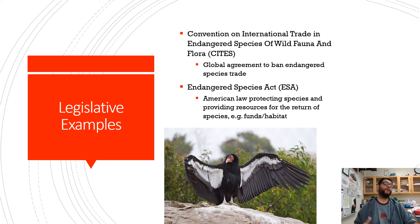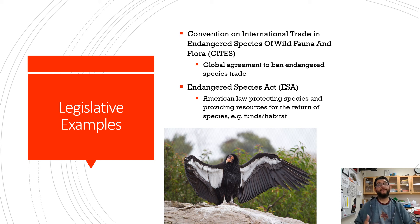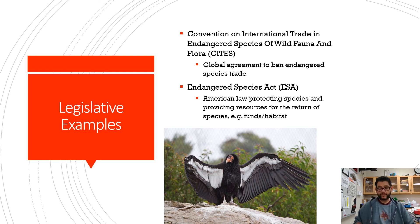The Endangered Species Act basically protects species, provides resources, and sometimes saves habitat or funds for the return of that species. A good example is the California condor, which has one of the largest wingspans on the planet. It was very near extinction, but the Endangered Species Act labeled it as endangered, saved certain habitat, and provided funding for zoo breeding programs to bring condors back. In the 1980s and 90s they were doing very poorly, but now their numbers have jumped significantly.